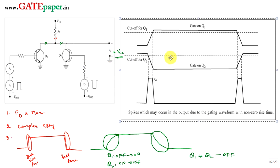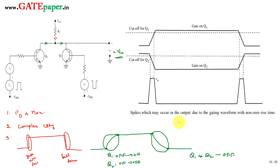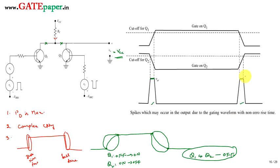Looking at the waveforms: the gate signal for Q1 (vc of Q1) and the gate signal for Q2 (vc of Q2) both have finite rise and fall times. During the transition portions where both transistors are simultaneously in the OFF condition, the output reaches towards Vcc, generating sharp spikes. If the gating waveform has definite rise and fall times, two sharp spikes may be generated at the output. These are the three disadvantages of this circuit.